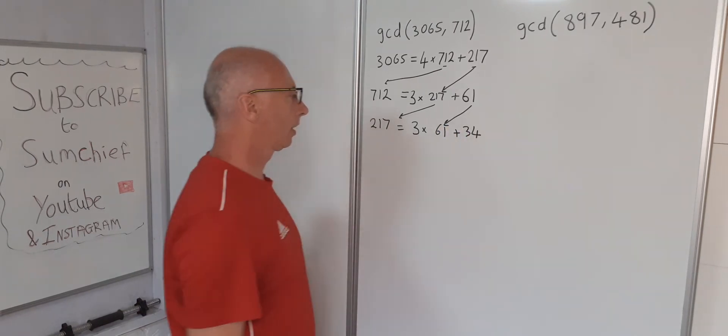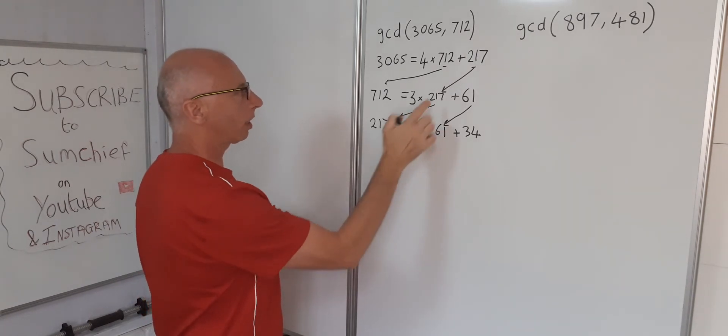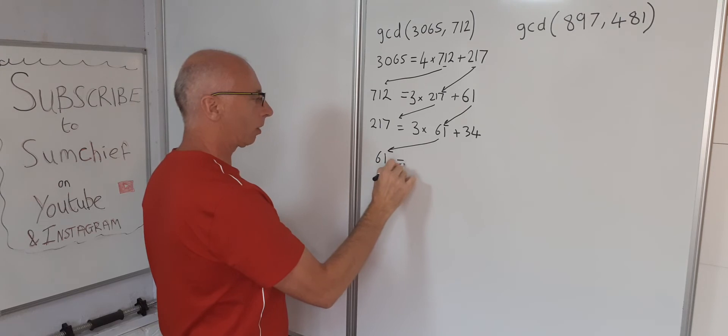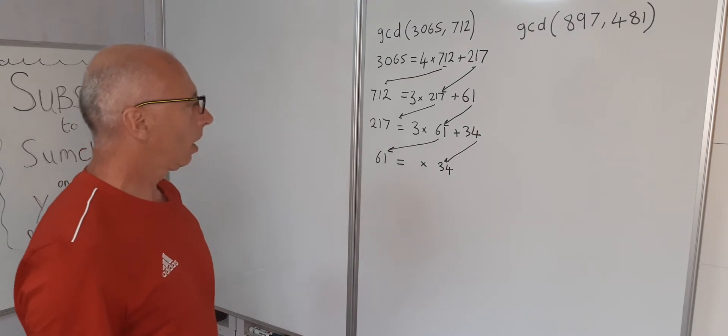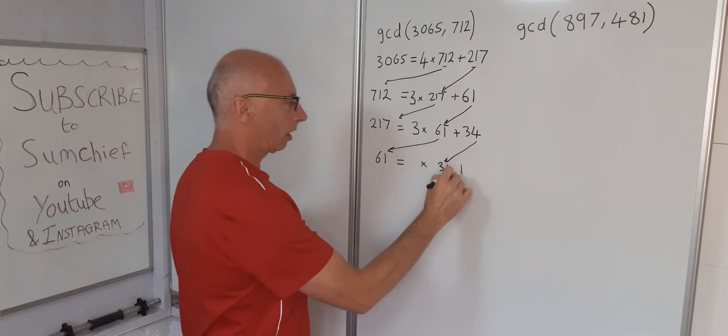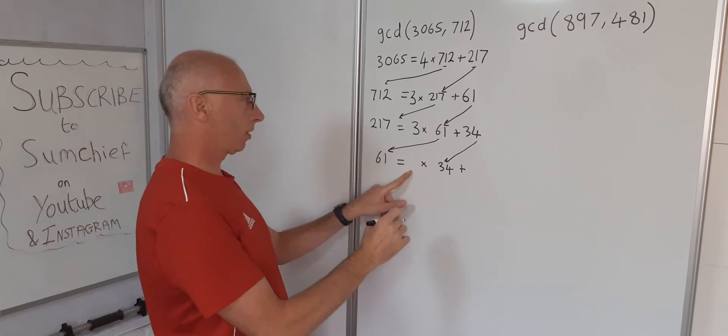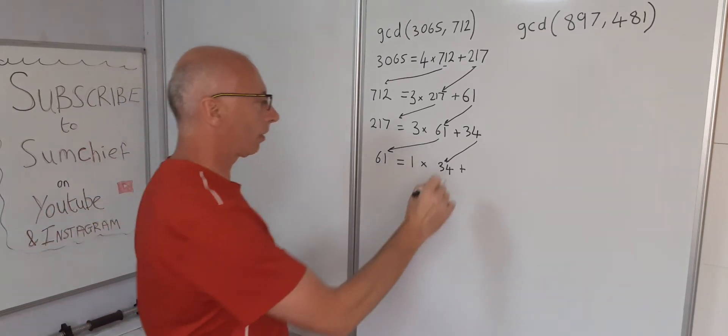Okay, so 61 now comes here following this method. 61 equals something times 34 with a little remainder. 34 times 1 will give us 34 with 27 left over.